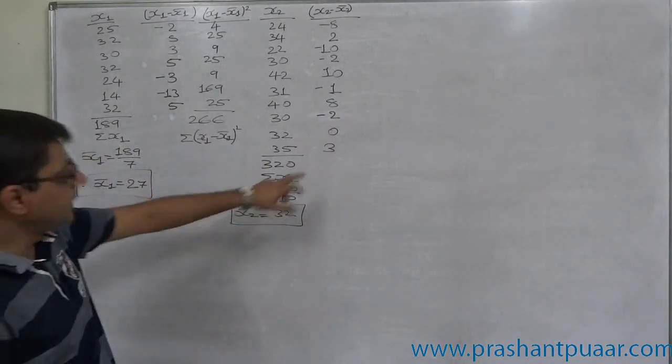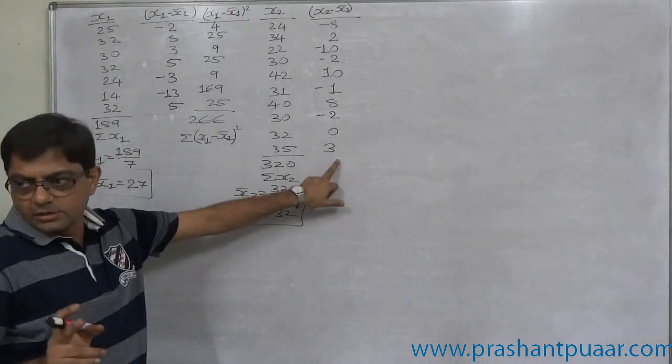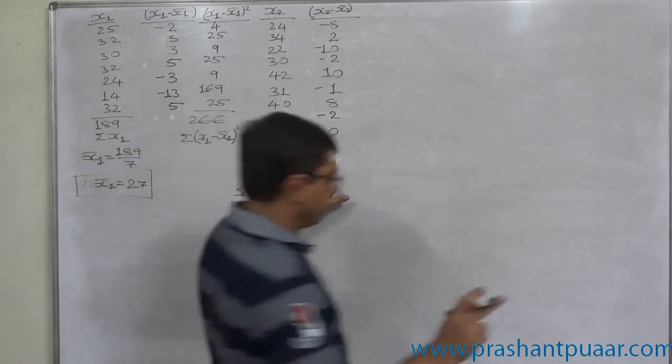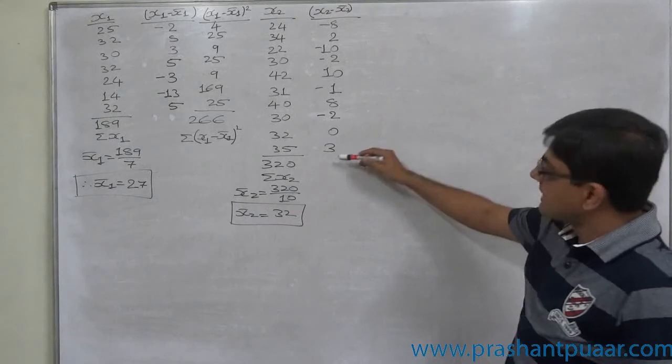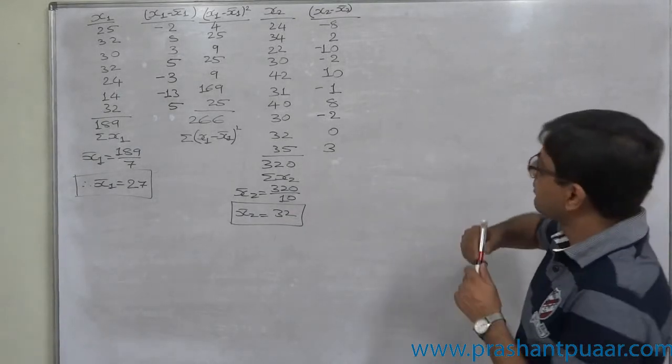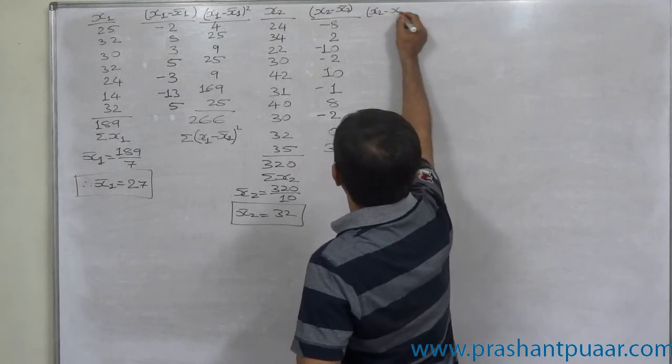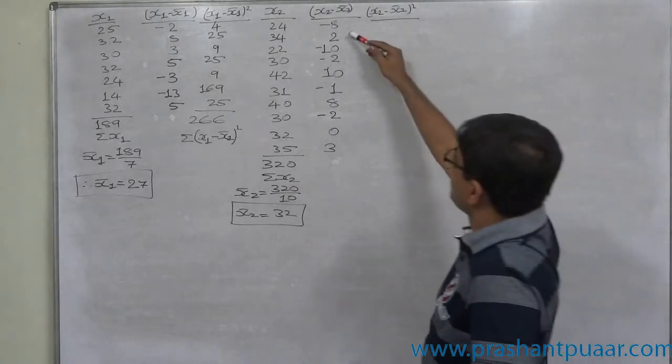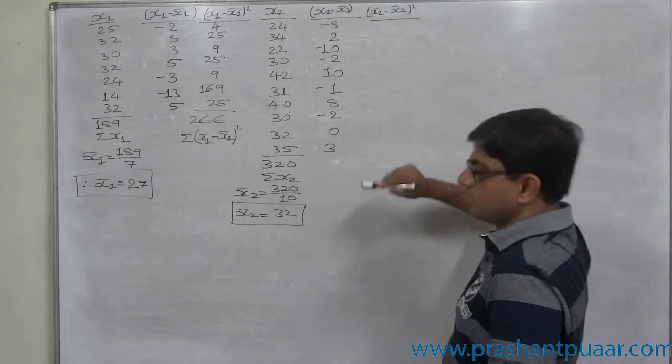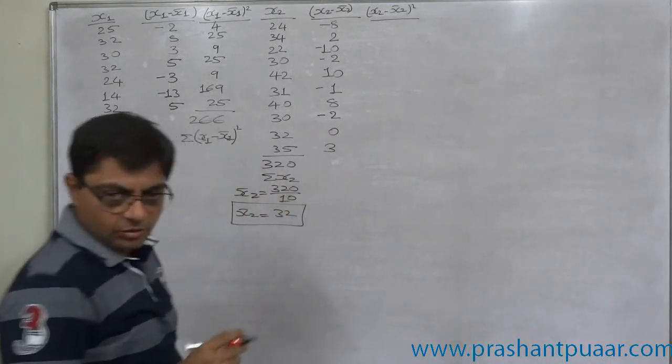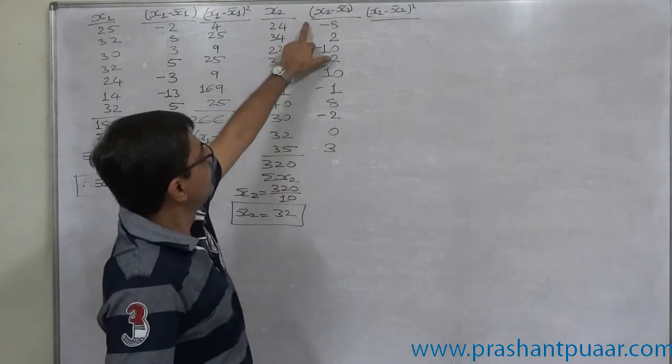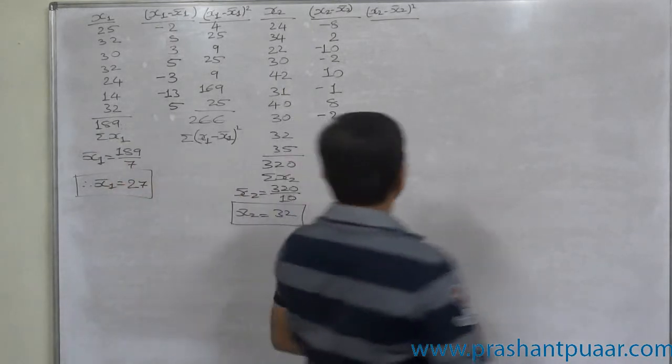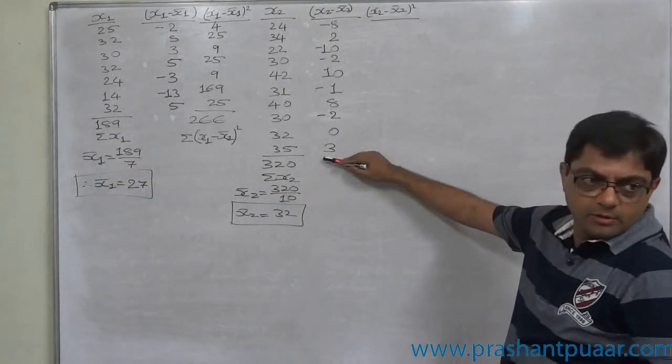Now it should be 0. First, always verify. This was actually a very good test case. As far as you do not get 0 here, do not go for further calculations. Never do it. First, always get 0 in the correct way. Then only go for square values. Now we have obtained 0 because the summation of deviations taken from mean is always 0. It must be 0. So this is a nice checkpoint for you.